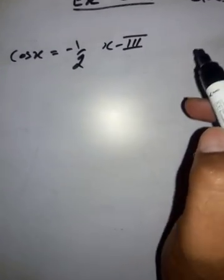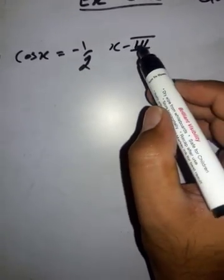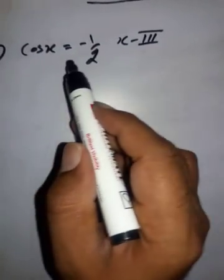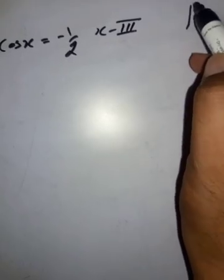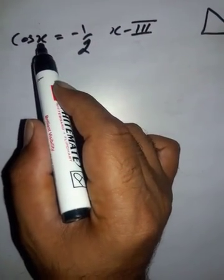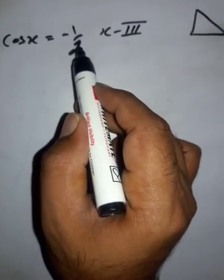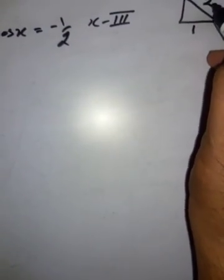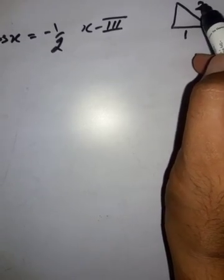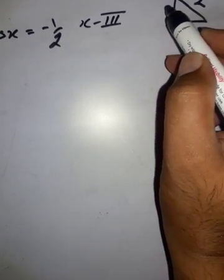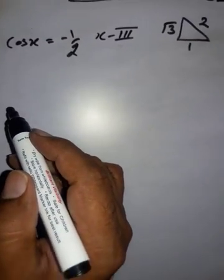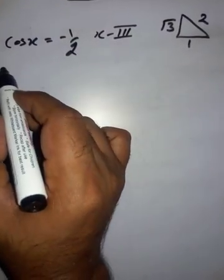The negative sign is because of the quadrant. By drawing the right triangle, we know the ratio of cos is base upon hypotenuse, so base = 1 and hypotenuse = 2. Finding the perpendicular: √(2² - 1²) = √(4 - 1) = √3. So perpendicular = √3, and we can now write down all other ratios.